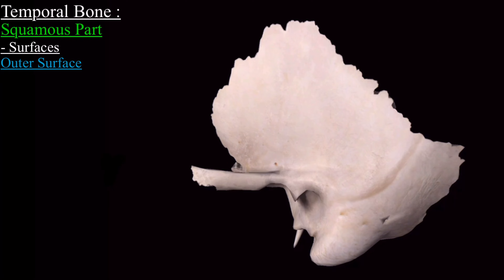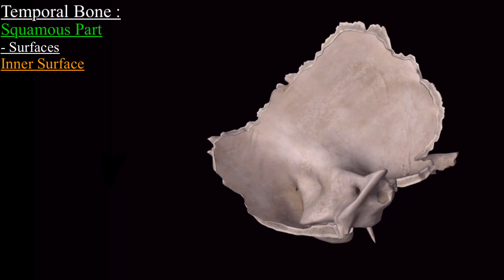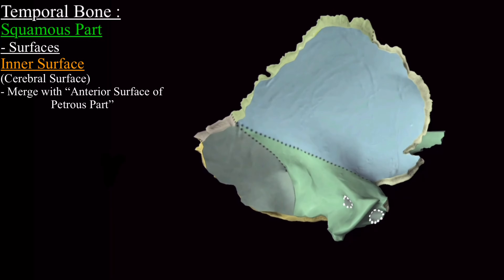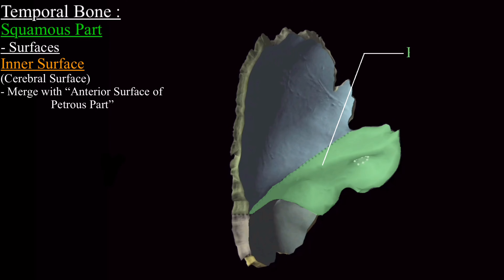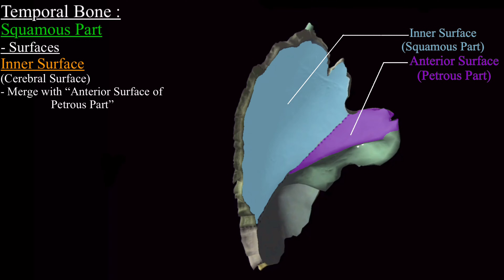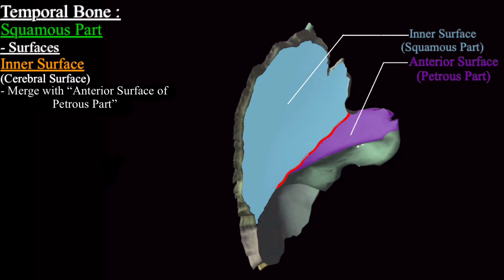Now we come to the internal surface of the squamous part, also called the cerebral surface. Below, the cerebral surface merges with the anterior surface of the petrous part of the temporal bone. There is sometimes a suture separating these two parts called the petrosquamous suture.